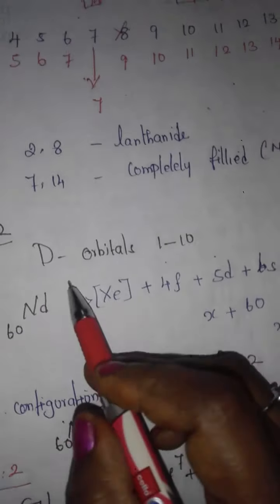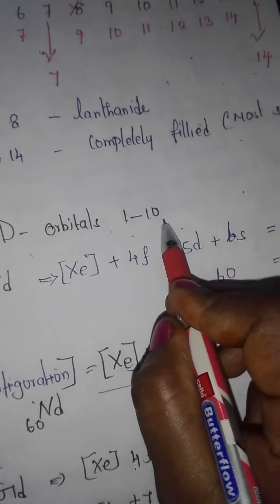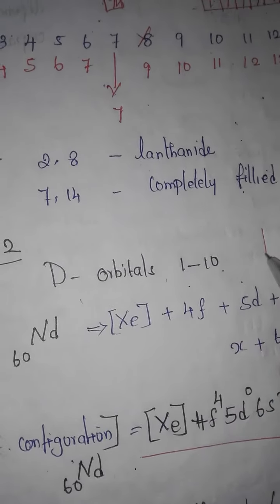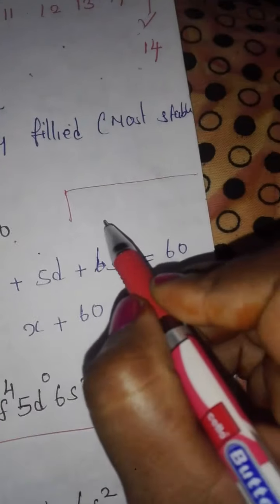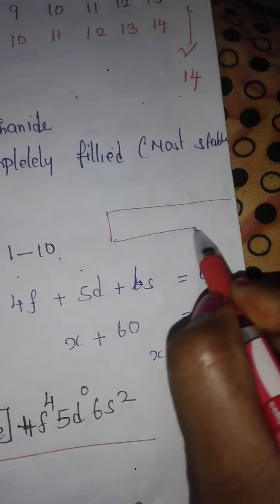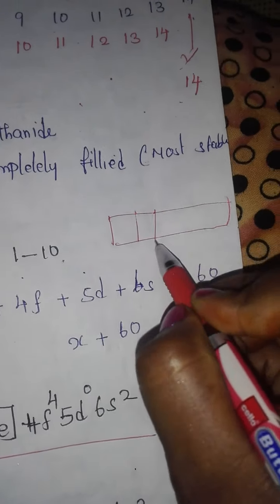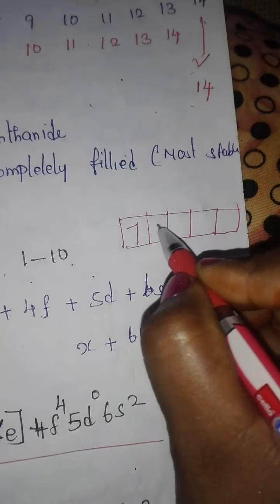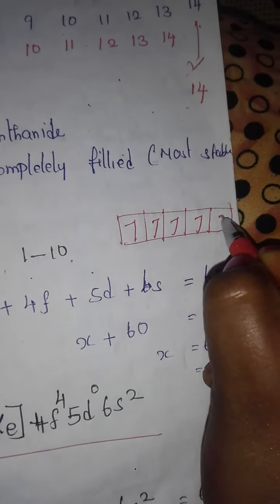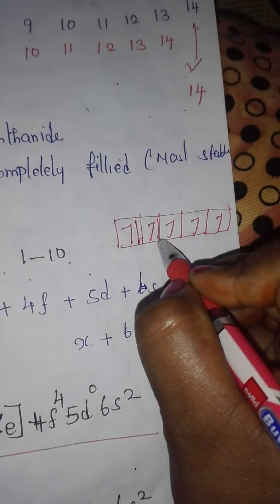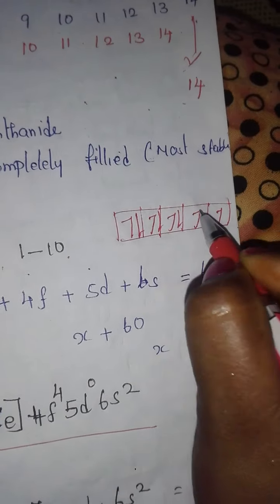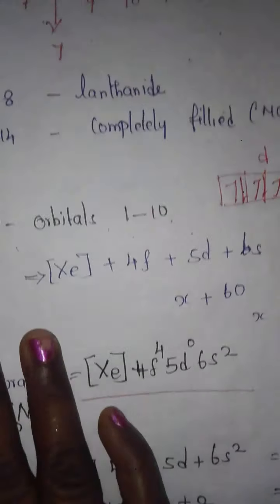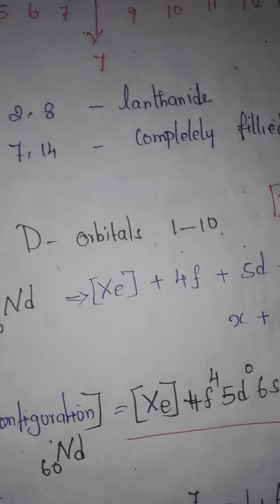For D orbitals, electrons fill from 1 to 10 orbitals. So D orbital electrons range from 1 through 10.